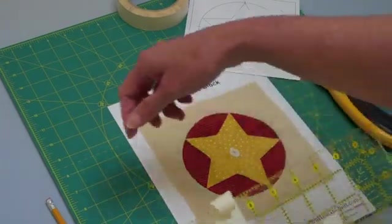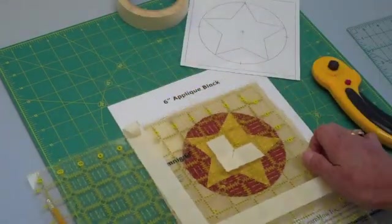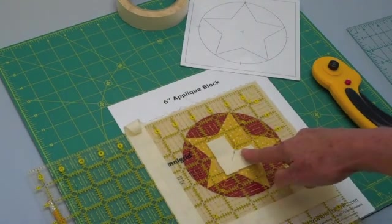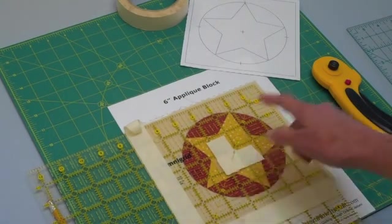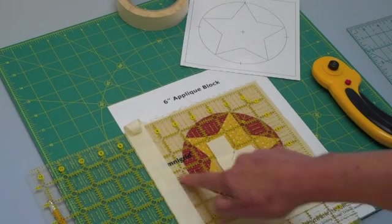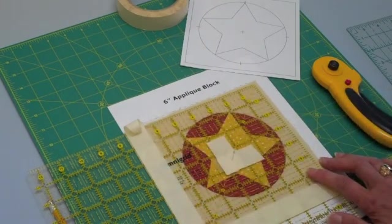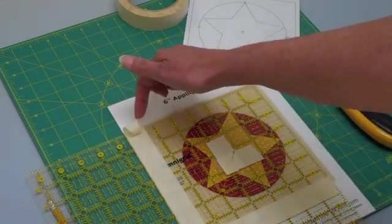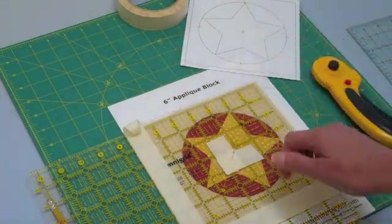So I have this ready to go. I can take and line this up with that center mark. And I can line these up, move it around. I look and I'm seeing that there's this excess here.